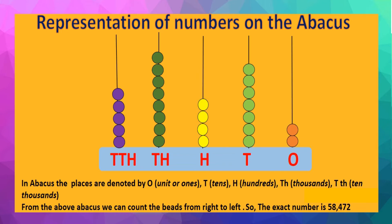Now count the beads of the thousands place spike: one, two, three, four, five, six, seven, eight. So it consists of eight beads.